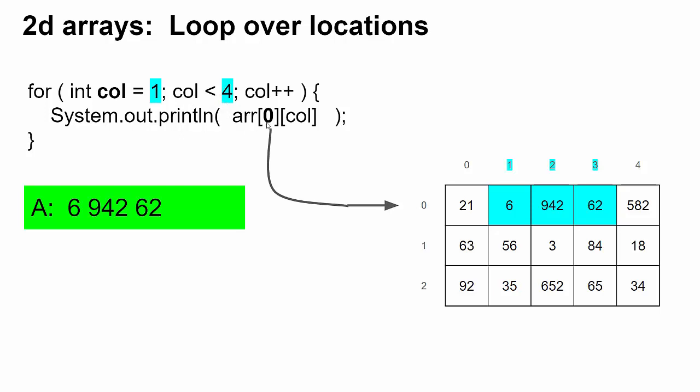The first number here is the row index. Because it's zero and never changes, I'm always in row zero right here. So the row doesn't change, instead the column changes. So I'm at row zero, column one, then row zero, column two, then row zero, column three. So that's why it's six, 942, 62.